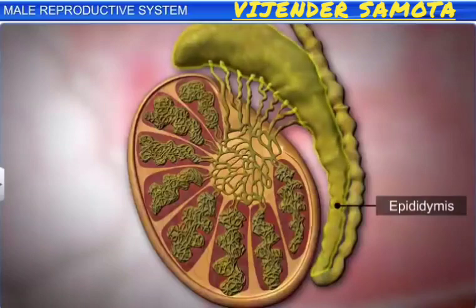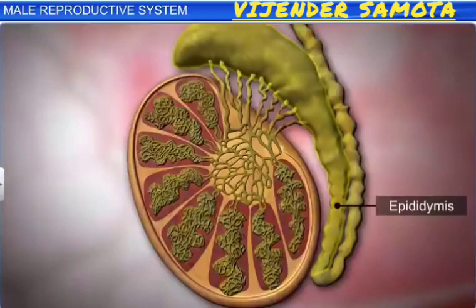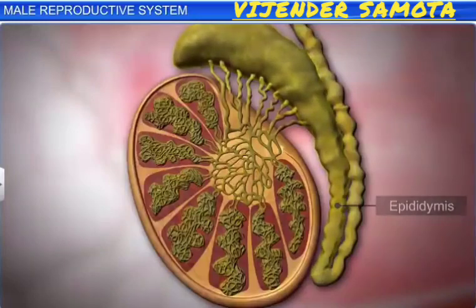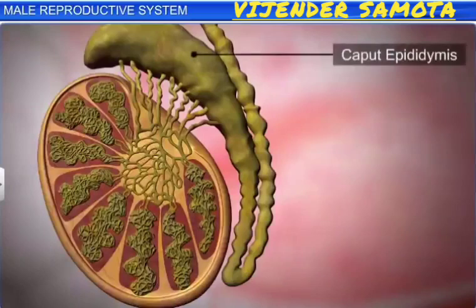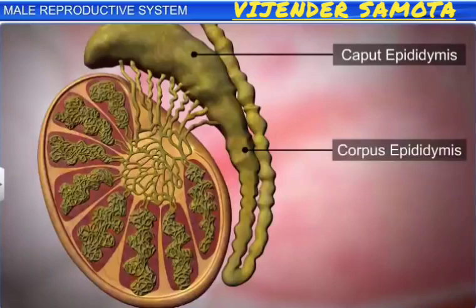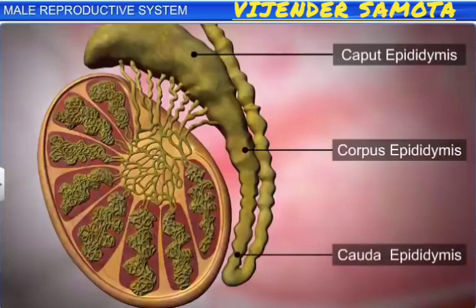The epididymis is a long, narrow, highly coiled tubule present along the posterior surface of the testis. It is divided into three parts: anterior — caput epididymis; middle — corpus epididymis; and posterior — cauda epididymis. The epididymis stores the sperms temporarily and nourishes them.